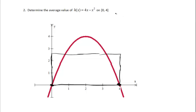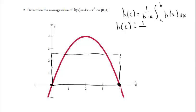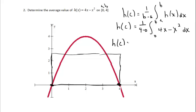Let's customize our formula. H of c equals 1 over 4 minus 0, integral from 0 to 4 of h of x, which is 4x minus x squared, dx. This is parabolic — not a geometric shape with a known formula — so we have to find the antiderivative and evaluate at the limits using the Fundamental Theorem of Calculus. The antiderivative is 2x squared minus x cubed over 3, evaluated from 0 to 4.